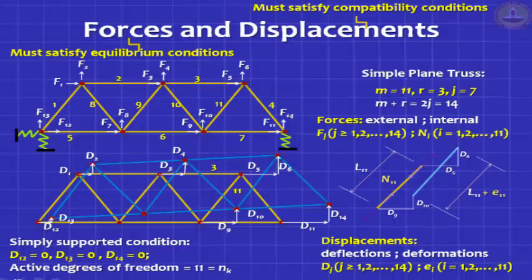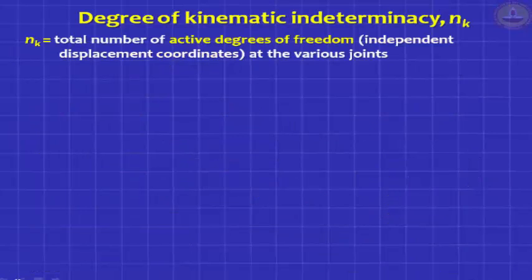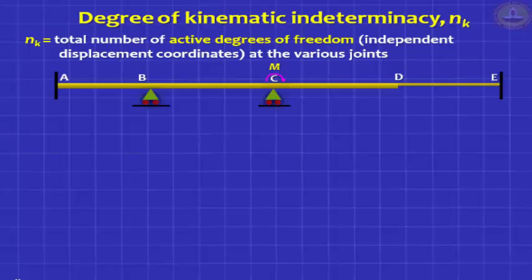In a truss, if a joint can move in 2 perpendicular directions, you have 2 degrees of freedom at that joint. Adding up all degrees of freedom at all joints and eliminating the restrained ones gives the kinematic indeterminacy N. Now let us look at a beam. This is a non-prismatic beam with elements AB, BC, and CD.